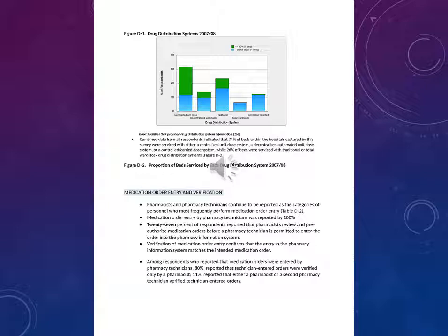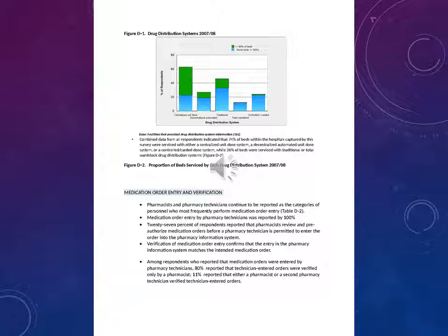Combined data from all respondents indicated that 74% of beds within the hospitals captured by this survey were serviced with either a centralized unit dose system, a decentralized automated unit dose system, or a controlled/carded dose system, while 26% of beds were serviced with traditional or total ward stock drug distribution systems.